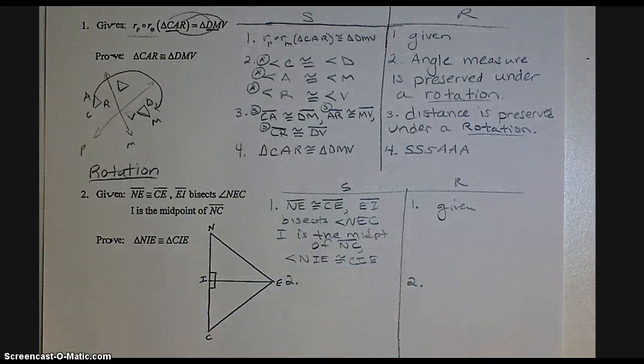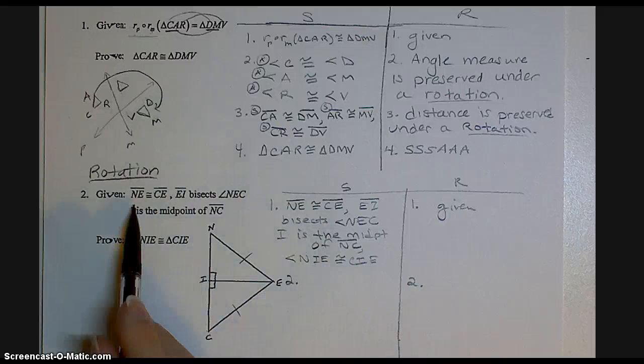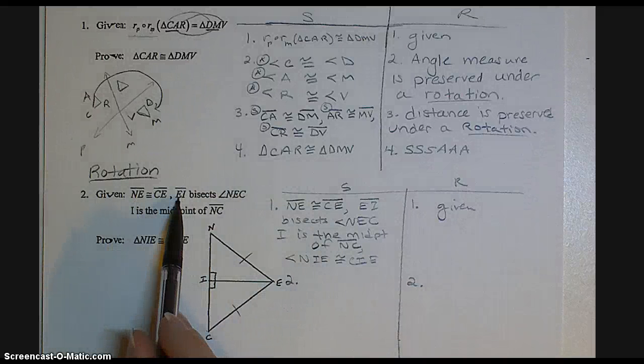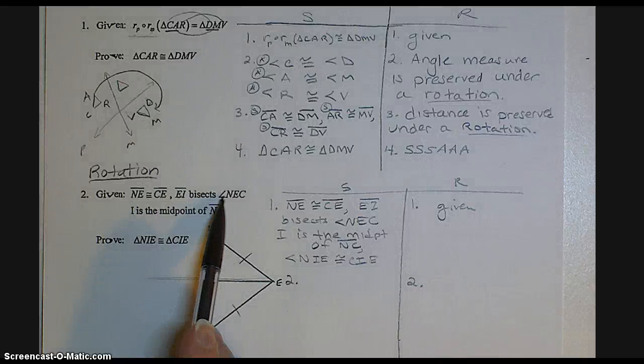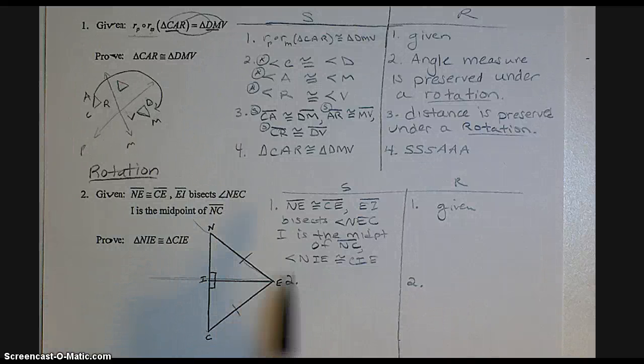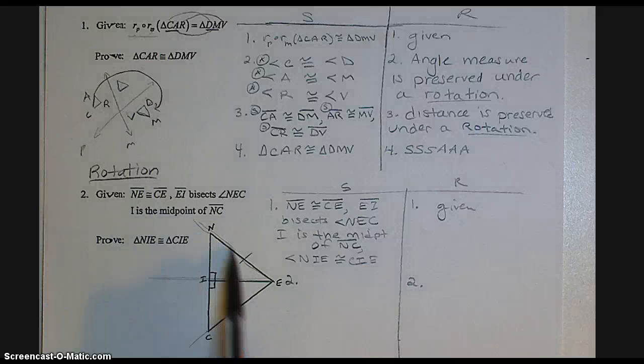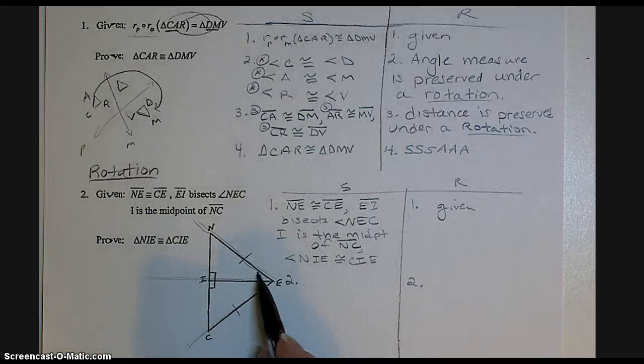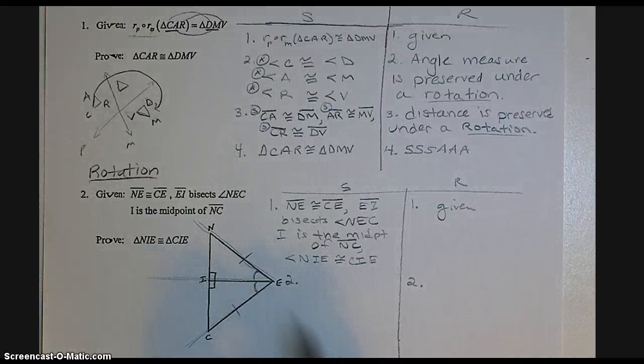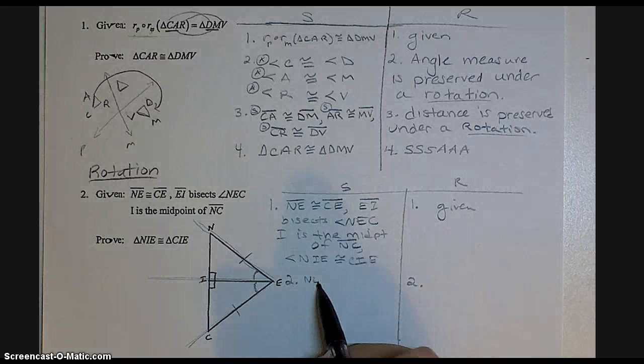Okay? Now I'm ready to go. So I'm going to mark out my diagram based on what they're telling me. If that bisects angle NEC, that then tells me that these two smaller angles are congruent. So that's what I'm going to put next.